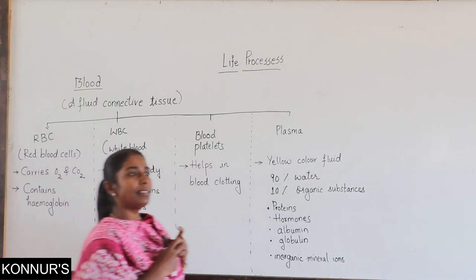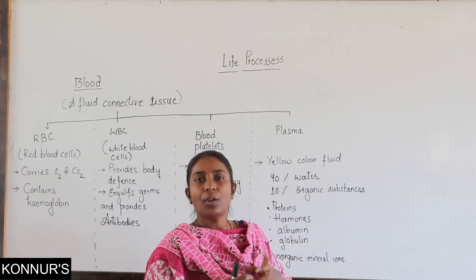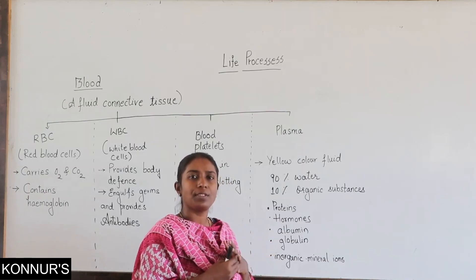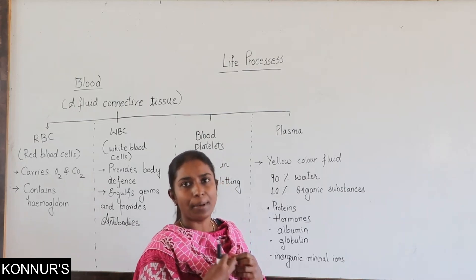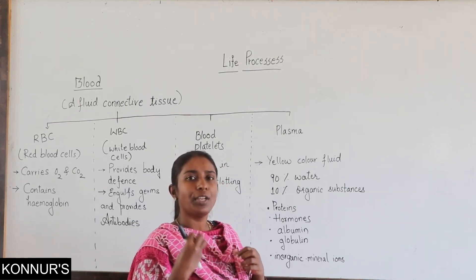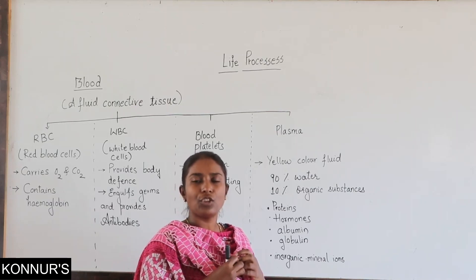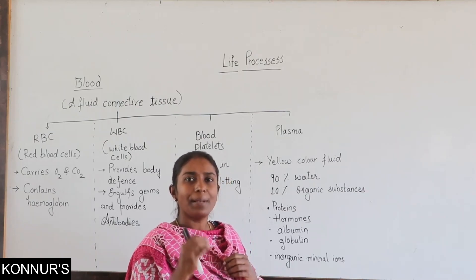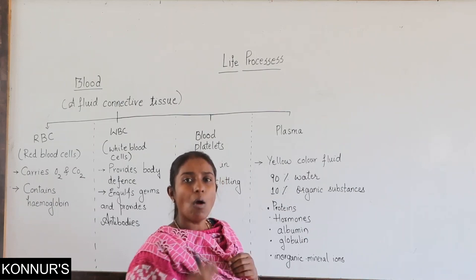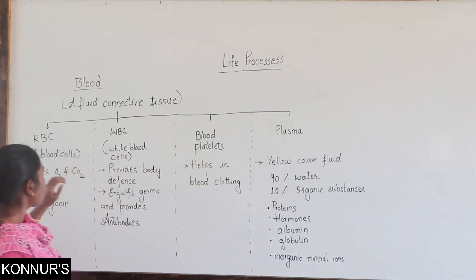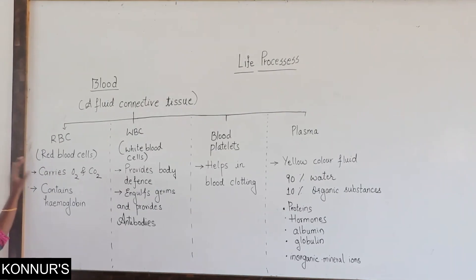Blood is liquid — we call it a fluid connective tissue. Whatever minerals, proteins, and vitamins are produced through digestion get diffused into the blood. These proteins have to pass on to each and every part of the body where muscles are present, and this work of transportation is carried out by blood. That is why blood is a fluid connective tissue which connects all the organs. Each component of blood has its own function.